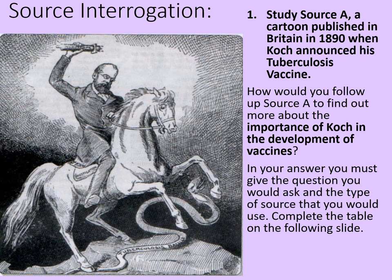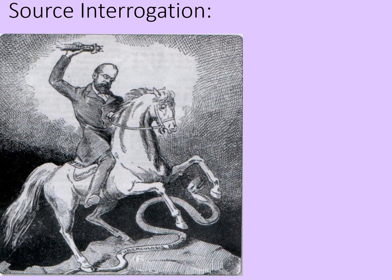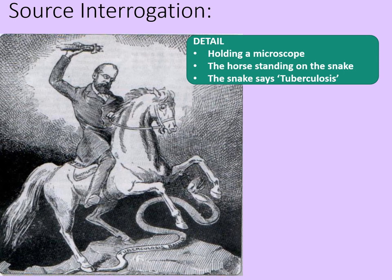In your answer, you must give the question that you would ask and the type of source that you would use — there would be a table for you to complete. It would be worth four marks, one for each section. Firstly, you'd have to choose a detail. Perhaps you choose the microscope that he's holding — it's even labelled 'microscope'. You might choose the horse, which is standing on the snake that says 'tuberculosis'. If you look really closely at the saddle, it's actually labelled 'investigation'.